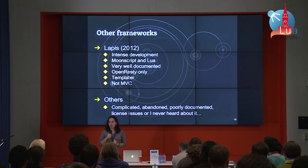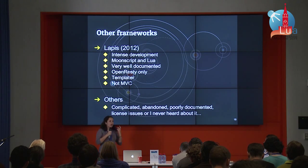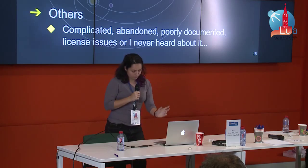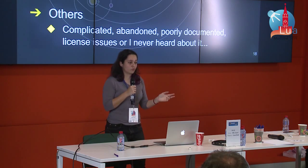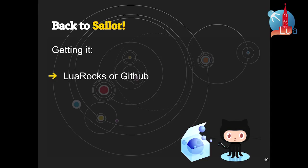Of course, there are some others I didn't mention here because they are very old, abandoned projects with no documentation — or maybe some I never heard of. If you know any other tools for Lua web development, please tell me. But back to Sailor — how do you get it? You have two options: from LuaRocks, you just install Sailor and it's done. Or if you want to collaborate and get the latest updates, you can get it from GitHub.